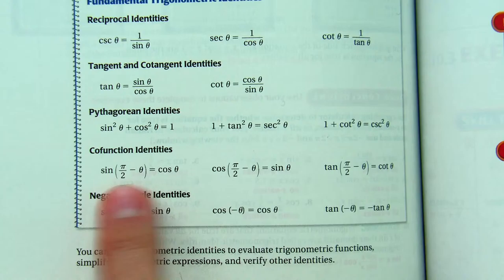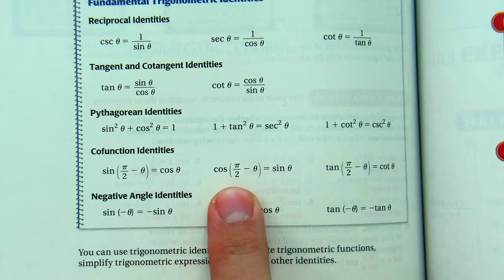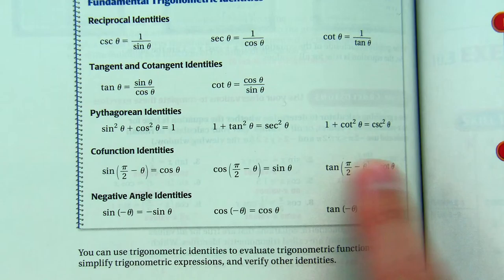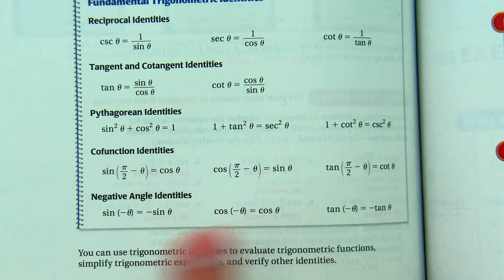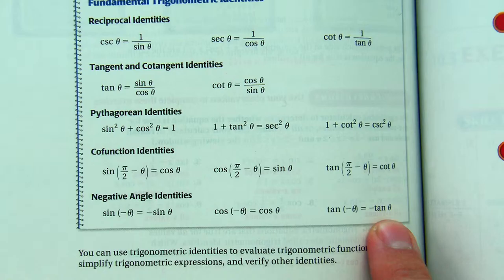The last six identities I'll give you on the test so you'll be able to reference them. The cofunction identities: sine of (π/2 − θ) equals cosine θ; cosine of (π/2 − θ) equals sine θ; and tangent of (π/2 − θ) equals cotangent θ. Then the negative angle identities: sine of (−θ) equals negative sine θ; cosine of (−θ) equals cosine θ; and tangent of (−θ) equals negative tangent θ.